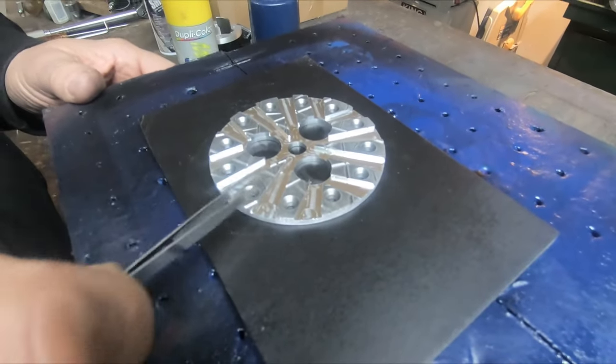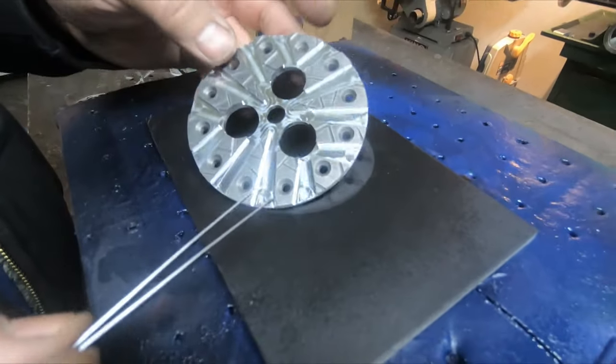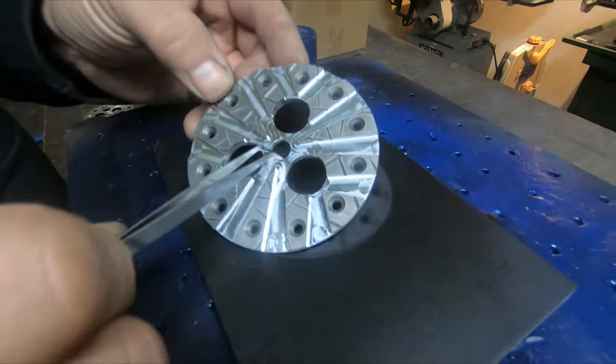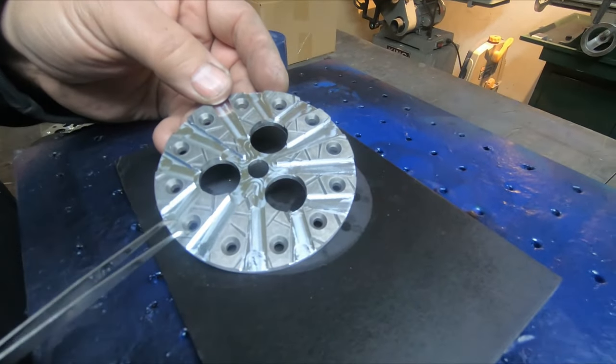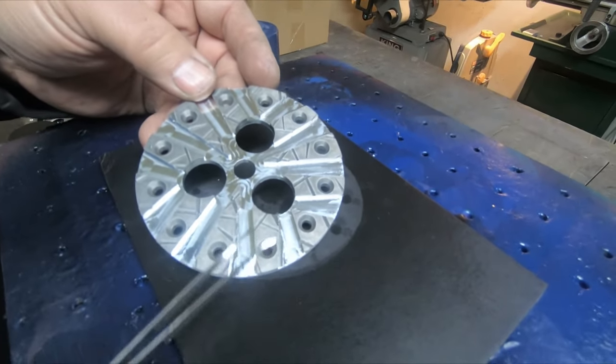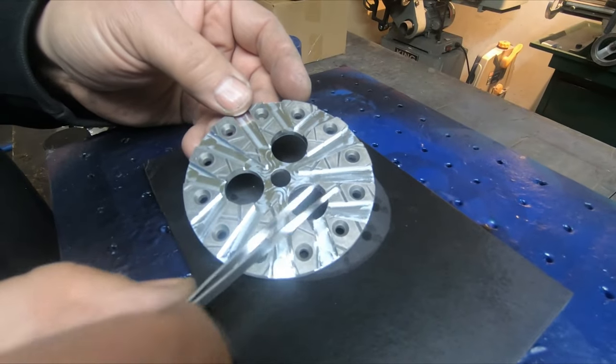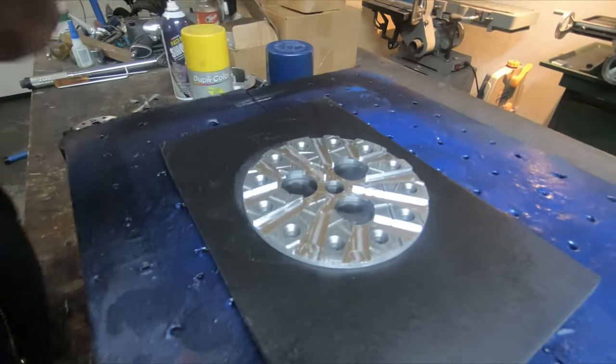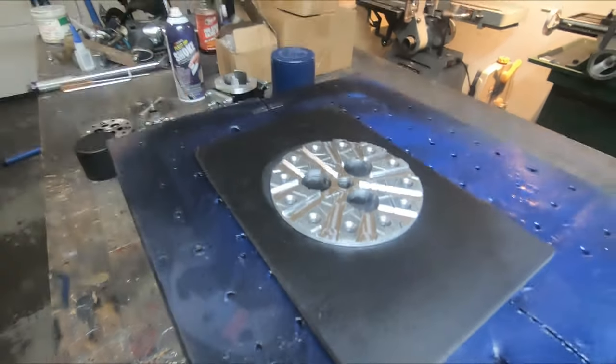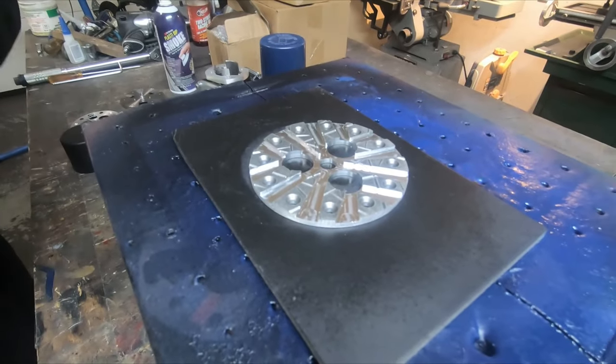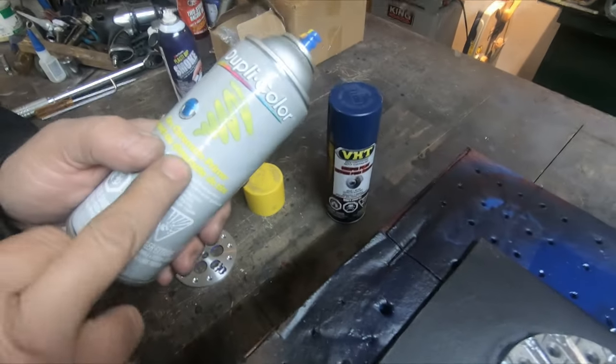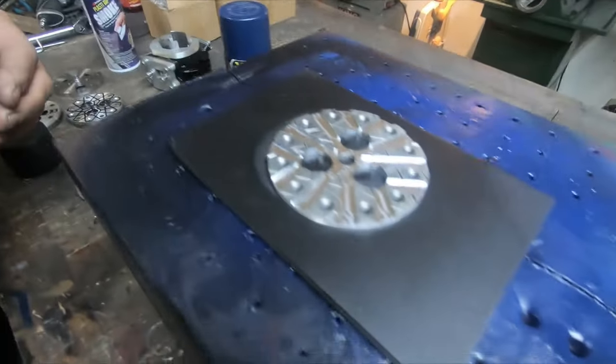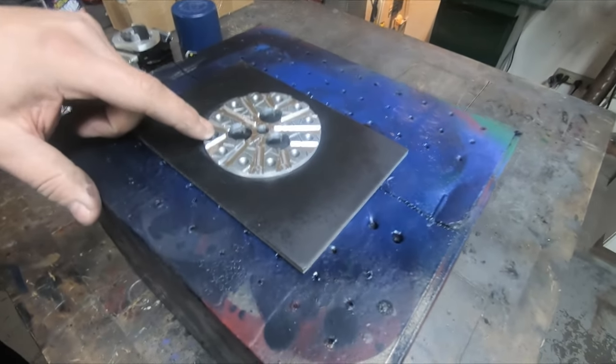Okay, now I've peeled off all the Plasti Dip in all the areas that I want to apply paint to. All in here, this area here I'm going to leave for a finish, and we're going to paint some colors into here later. So what I'm going to do now is I'm going to take some zinc primer for aluminum, and we're going to paint it right over top of the Plasti Dip.